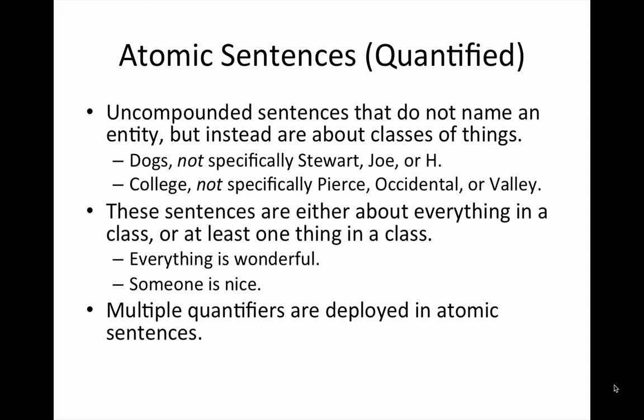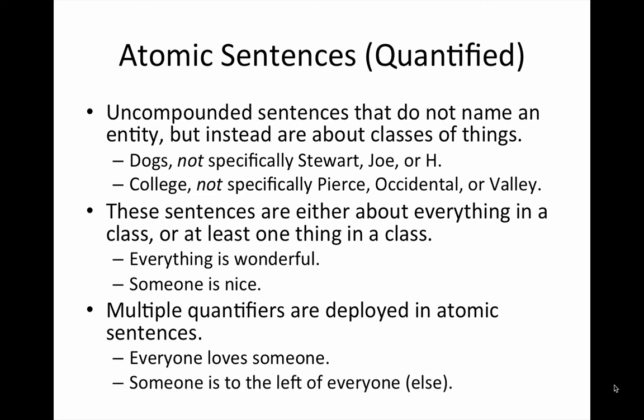In our daily lives, we oftentimes use multiple quantifiers in a single sentence. For example: 'Everyone loves someone.' We have a universal quantifier and an existential quantifier — 'everyone,' 'someone' — and then we have the relationship expressed by the relational predicate 'loves.' We could also say 'someone is to the left of everyone,' which implies 'everyone else' — but more on that later. The point is that we have an atomic sentence, but this time we're talking about a spatial relationship, not feelings. We say there is something — someone — that is to the left of everyone else.